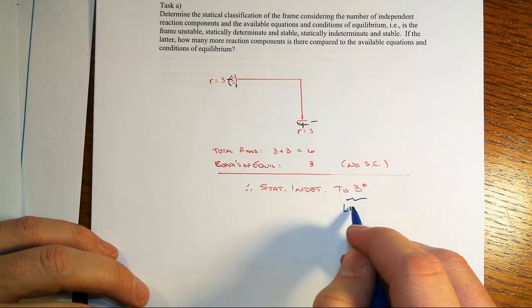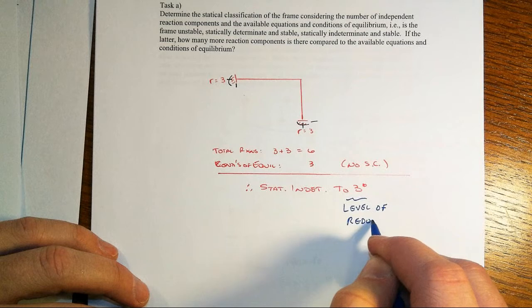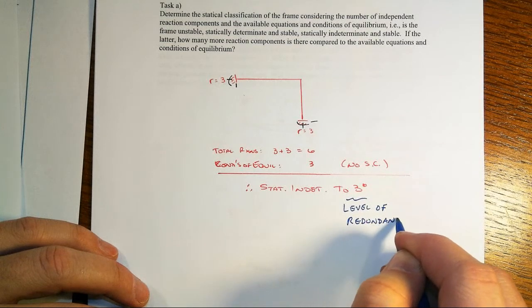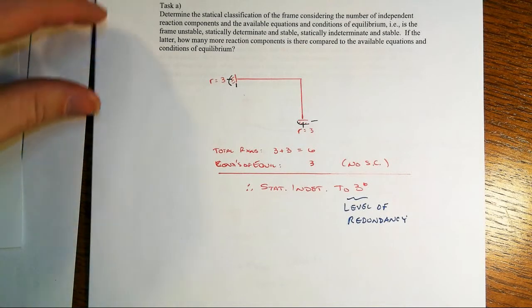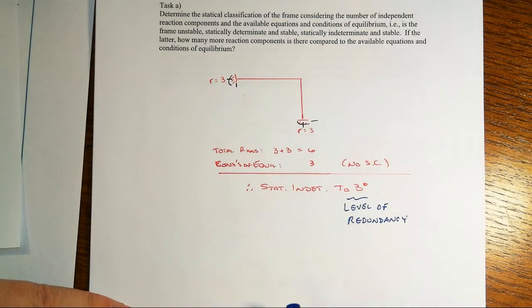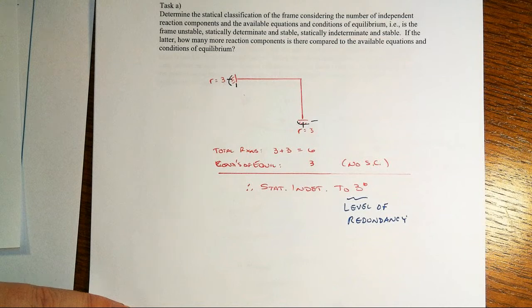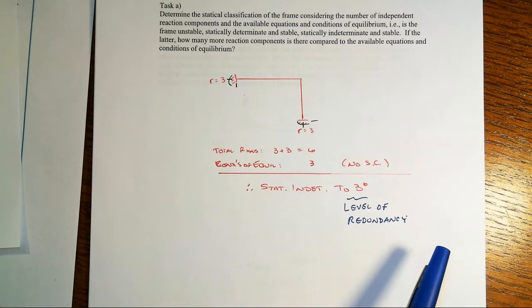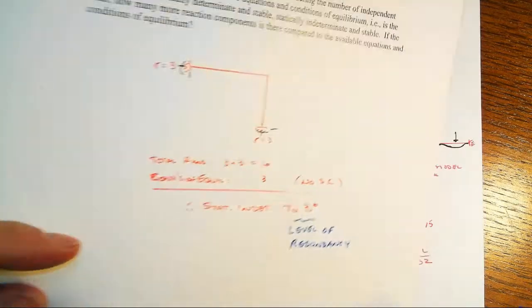This is the level of redundancy. If we were to have one of these reaction components fail, we might be able to redistribute the loading effects to other reaction components and be just fine. We have the theoretical possibility of having three different reaction components potentially fail and still being able to support the applied loads, potentially. Because with that redistribution, there may end up being other overloads.